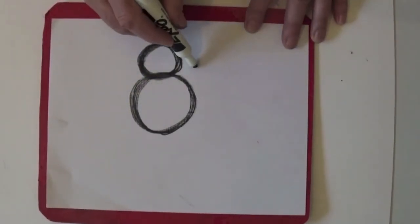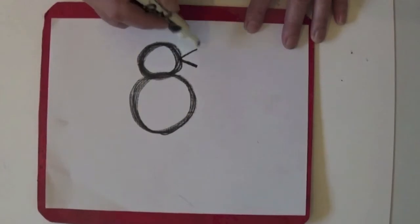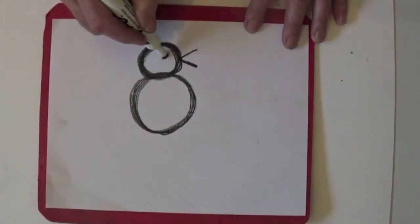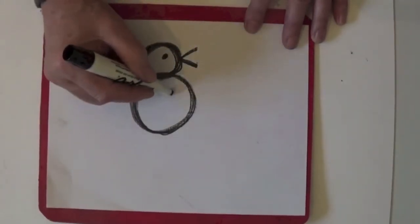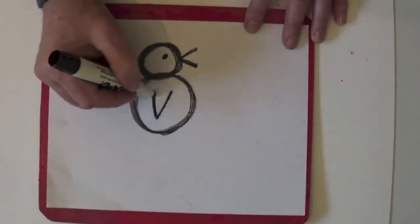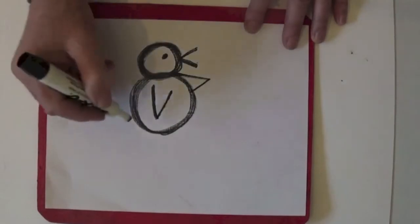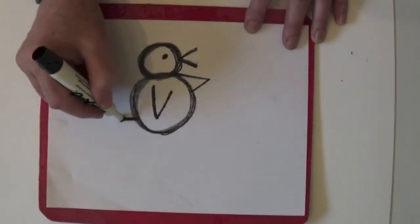And he's got a zigzag for a mouth and a dot for the eye. Circle with a dot. Zigzag. Zigzag wing. And a zigzag wing over here. And a zigzag for his tail.